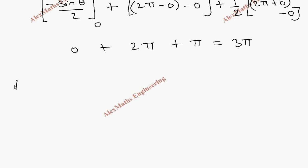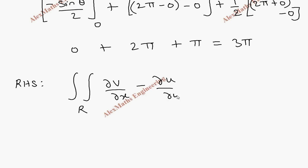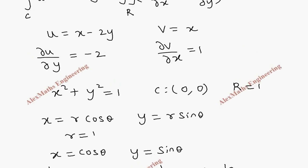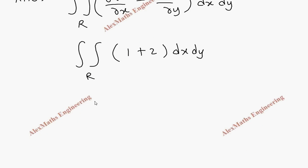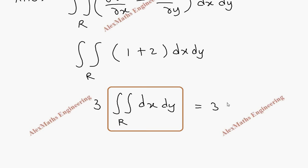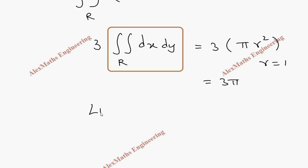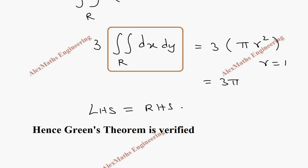Now for the right-hand side of Green's theorem: double integral over region R of (∂v/∂x minus ∂u/∂y) dx dy. Since ∂v/∂x is 1 and ∂u/∂y is minus 2, we get 1 minus (minus 2) equals 3. Taking 3 outside, we have 3 times the double integral of dx dy over region R, which represents the area of the circle. Using the formula πr² with r equal to 1, the RHS equals 3π. Since LHS equals RHS equals 3π, Green's theorem is verified.